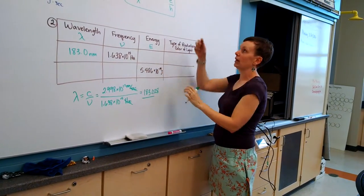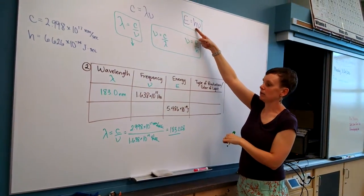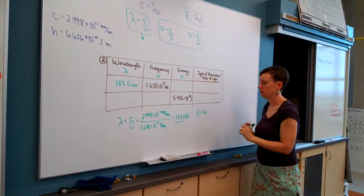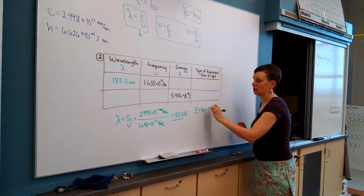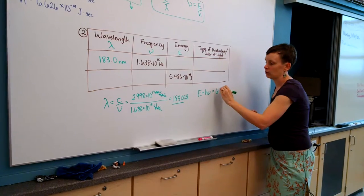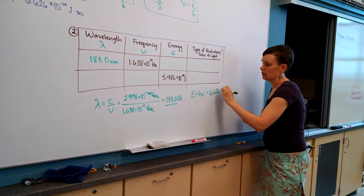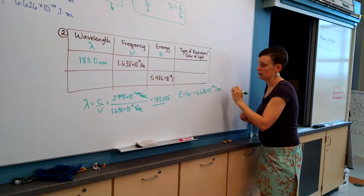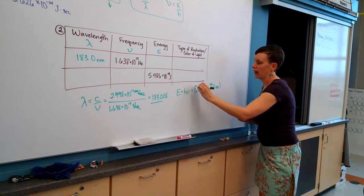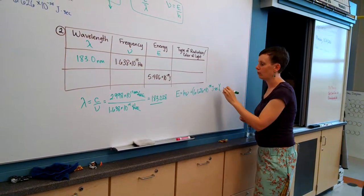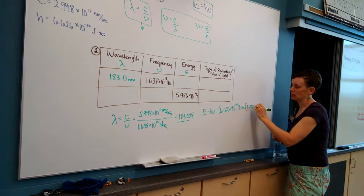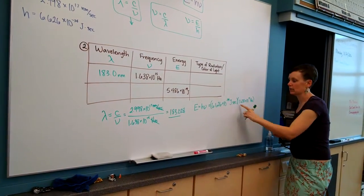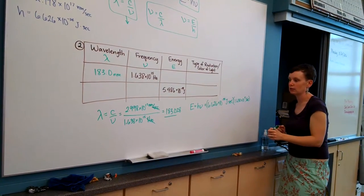To find energy for this one, if we're trying to find energy we're going to use this equation always. Energy equals H times nu. H is Planck's constant, which I will always give you on labs and tests, 6.626 times 10 to the negative 34th joules seconds. Then we're multiplying that by the frequency from the table, 1.638 times 10 to the 15th hertz, which means per second. So seconds times per second is going to cancel out, leaving us with joules.